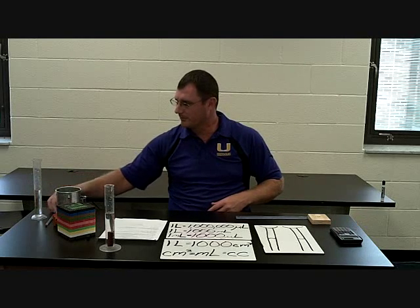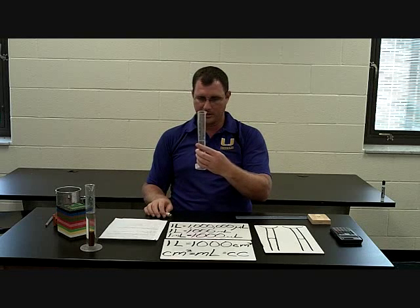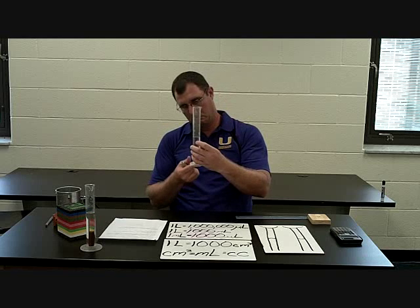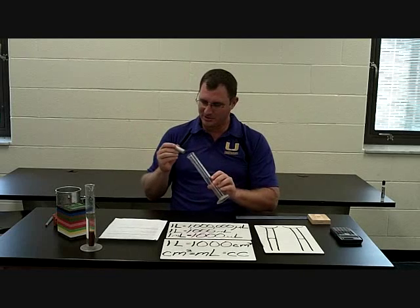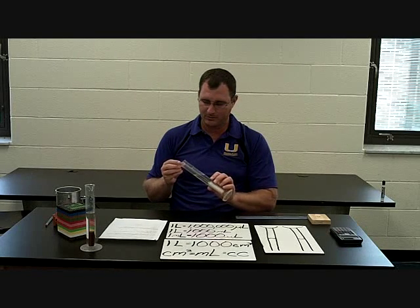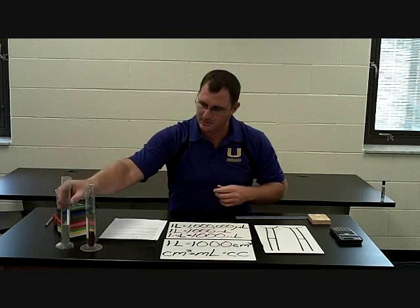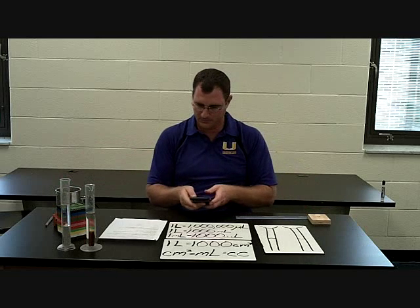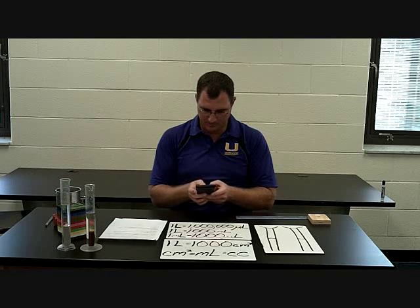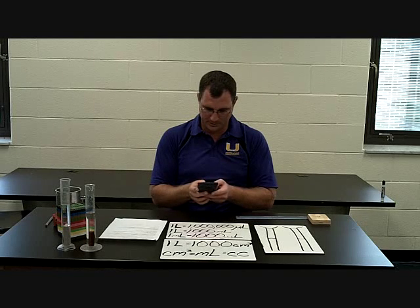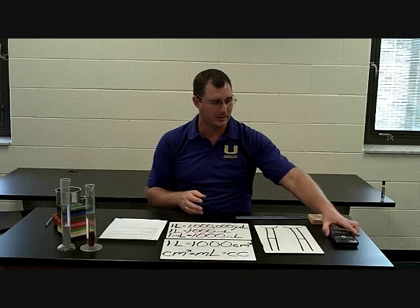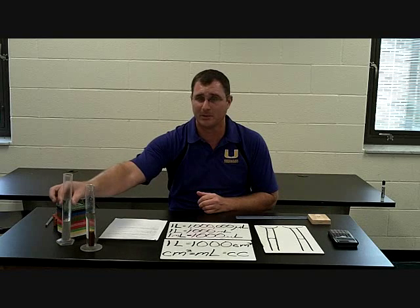For my aluminum cylinder, I'm going to take another graduated cylinder. My initial volume of water is 59.1 milliliters. Then I'm going to add my aluminum cylinder — it goes up to 79.2 milliliters. I do the math: 79.2 minus 59.1, and I get 20.1 milliliters. That was the amount of water displaced by that object.